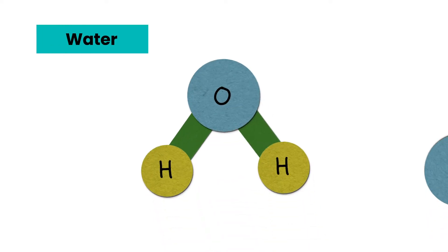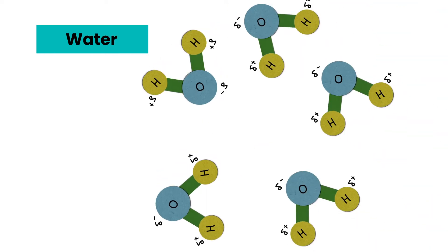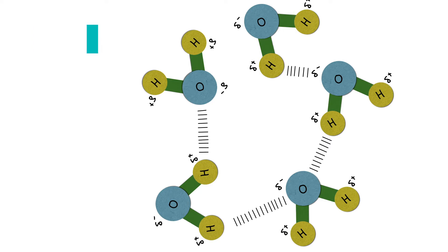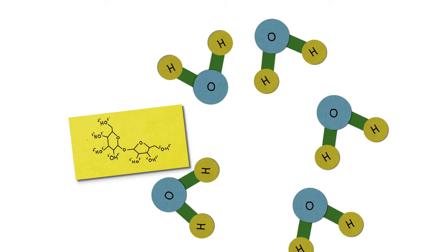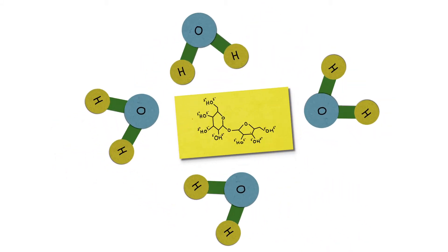Now let's think about our solvent, the water. It contains an oxygen, which is very electronegative, bonded to hydrogens. Because of that, there exists a dipole moment within water, and because it's an oxygen bonded to a hydrogen, we call it something special — a hydrogen bond that forms between different molecules of water. We also have to break those hydrogen bonds to allow the water to surround and dissolve the sugar. Once those hydrogen bonds between water molecules have been broken, water surrounds the sugar molecule and starts having dipole-dipole interactions between the solvent and the solute, with some hydrogen bonds also forming.